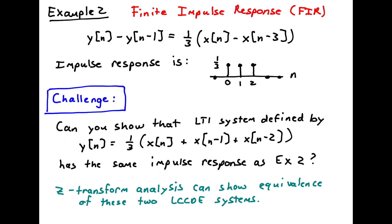This is an example of a finite impulse response (FIR) system — a finite-length impulse response that starts at zero, ends at two, and is zero outside that range. In this video we've seen examples of both IIR and FIR systems. As a challenge: can you show that a related LTI system has the same impulse response as found in example two? The z-transform analysis, which we'll cover next, will provide an easy way to show the equivalence of such difference equations. Thank you for watching.